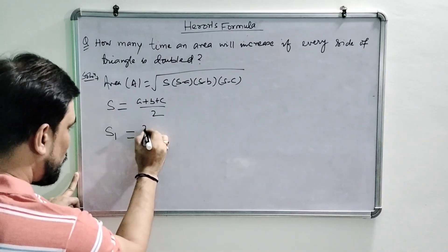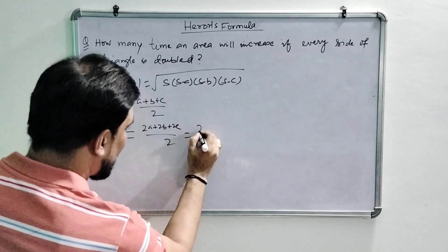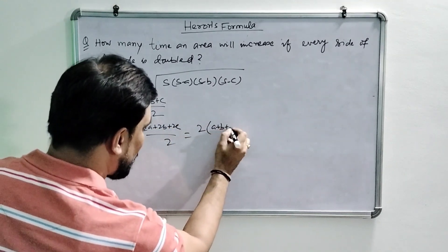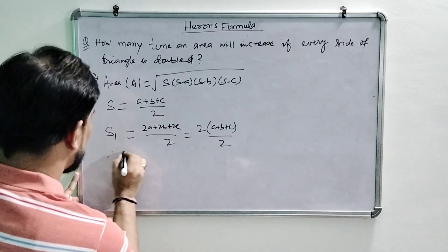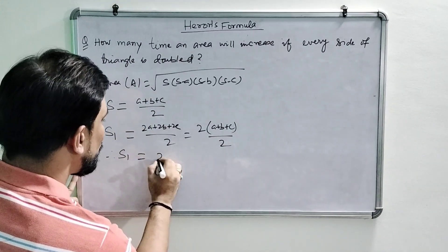So if the sides are doubled then the new semi-perimeter s1 will be 2a plus 2b plus 2c upon 2. We can write 2 as common so a plus b plus c upon 2. So s1 is now 2s.